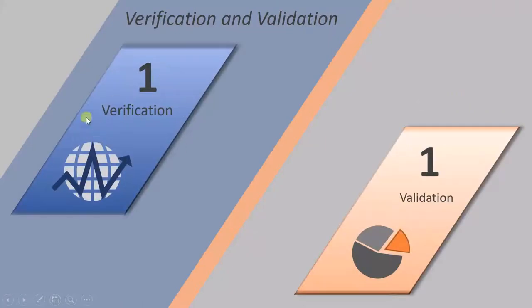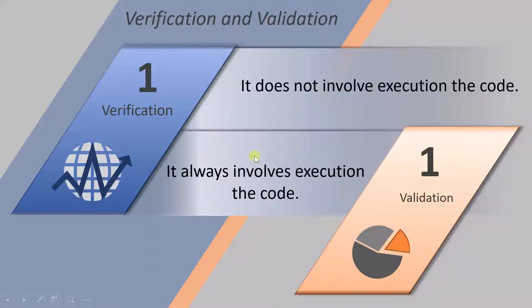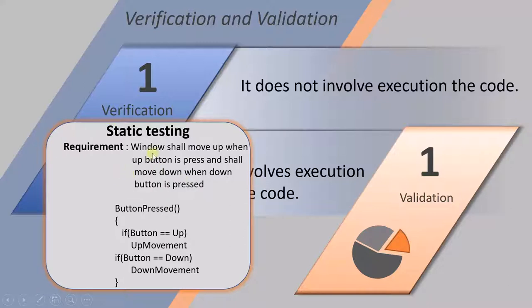The first point about verification and validation: verification does not involve execution of the code, whereas validation involves execution of the code. In verification the code is not running, but in validation the code is running. For example, the window shall move up when the up button is pressed and move down when the down button is pressed. When we wrote this code we found a problem, which was corrected by performing static testing — where the code is not running. That type of testing comes under verification.